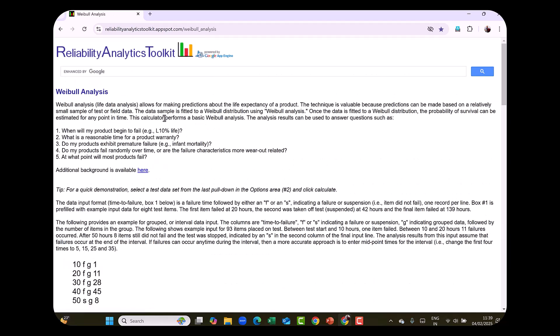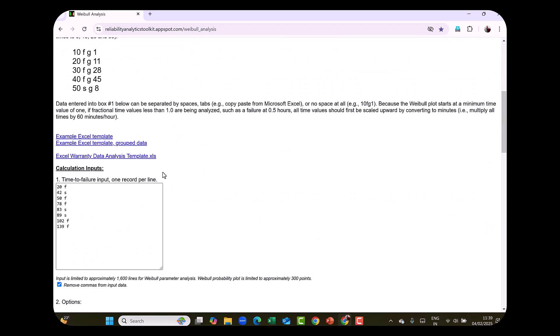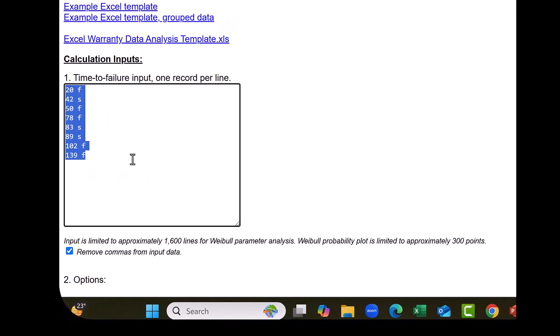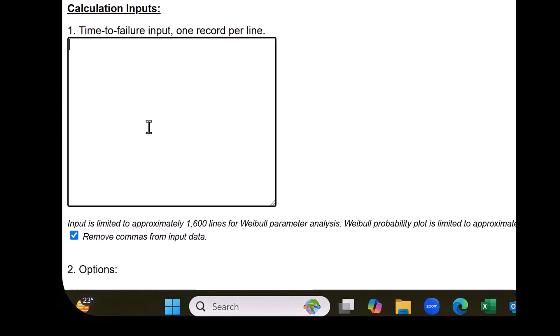So this is the procedure. There are instructions available how to use it. There is a box here where we have to paste the data. And I am just deleting the data which is already existing in the software there. And I am pasting our data with control V command. So it has copied the data directly from Excel.